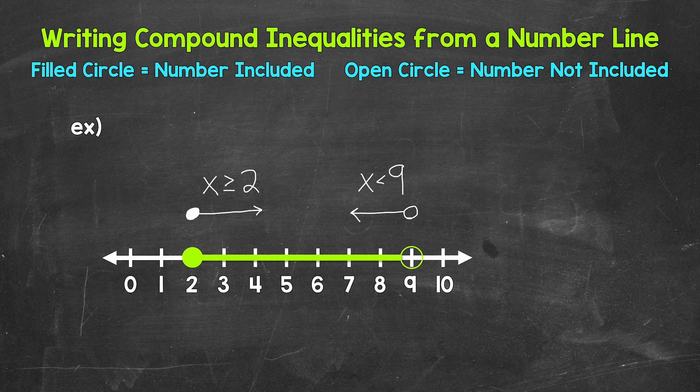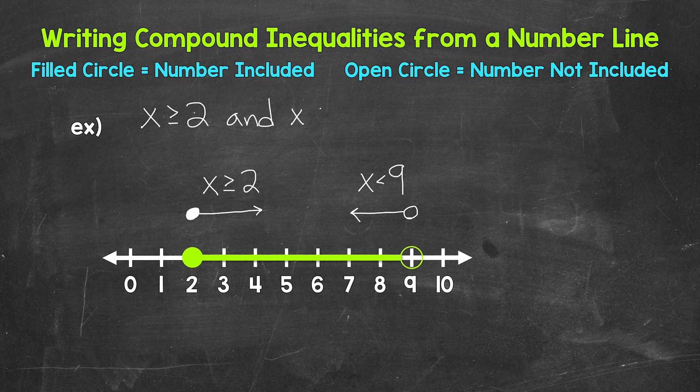And these are our two inequalities that make up our compound inequality. And since this is an AND compound inequality, we want where these two inequalities overlap. X has to be greater than or equal to 2 and less than 9. So let's write this out: X is greater than or equal to 2 and x is less than 9.